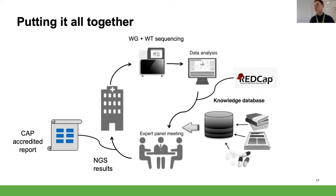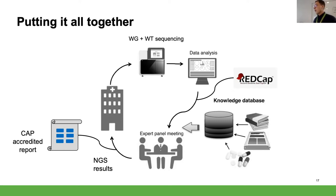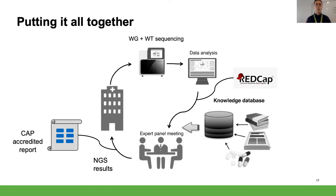What this might look like when put together: we would get a request from a hospital or collaborator, undergo whole genome and whole transcriptome sequencing, and the pipelines at OICR would do a lot of the crunching. Then, with a knowledge base and clinical information fed in from a REDCap instance, our group and clinical molecular geneticists would create a report signed out by Dr. Pugh and passed on to the physician to ultimately best-inform patient care.